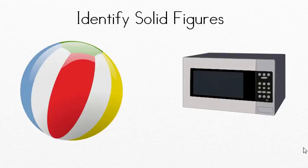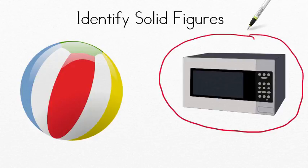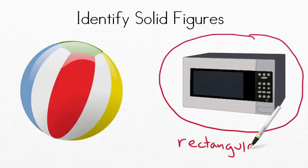Finally, we have two shapes here. We have a microwave and a beach ball. Can you point on your screen to the rectangular prism? Which one is the rectangular prism? You're right. This microwave right here, that's the rectangular prism. Rectangular, like as in rectangle, rectangular prism.